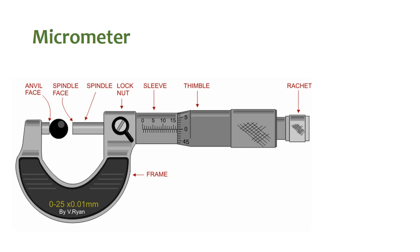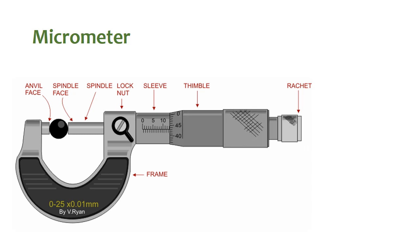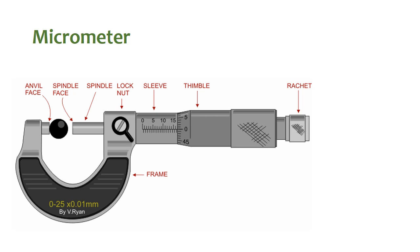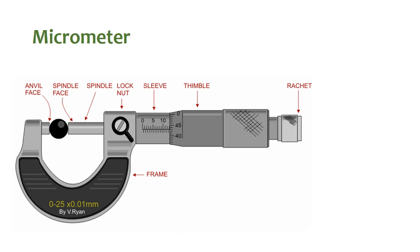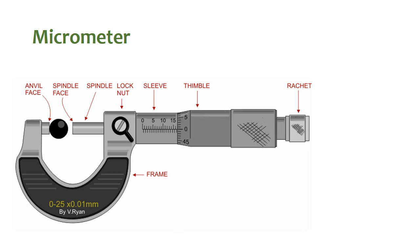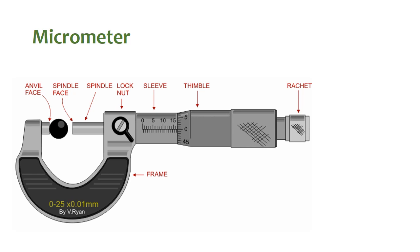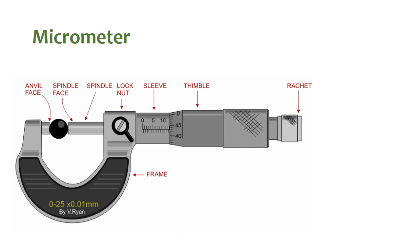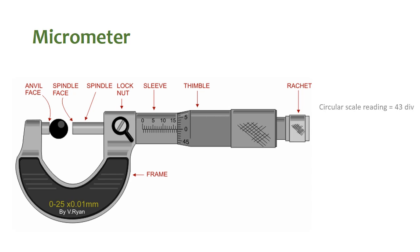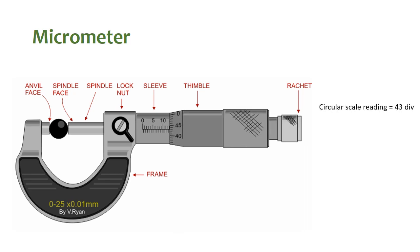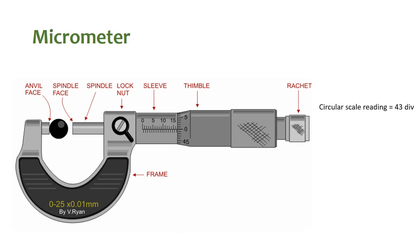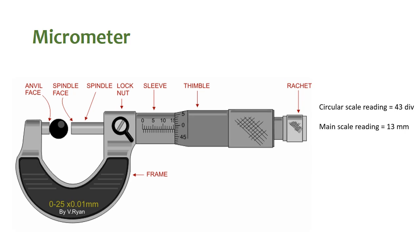When the thimble moves further you would be able to see the main scale reading. The last visible division will give you the main scale reading, that is 13 mm, and on the circular scale you would be able to see the 43rd division. So here you are having a circular scale reading of 43 divisions and a main scale reading of 13 mm.